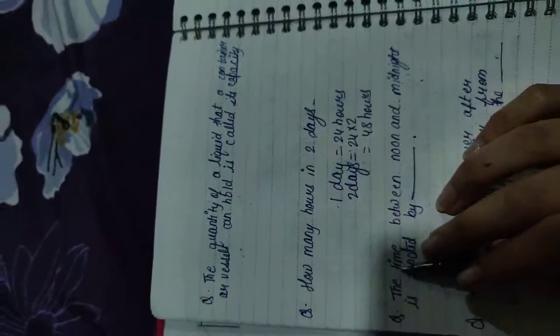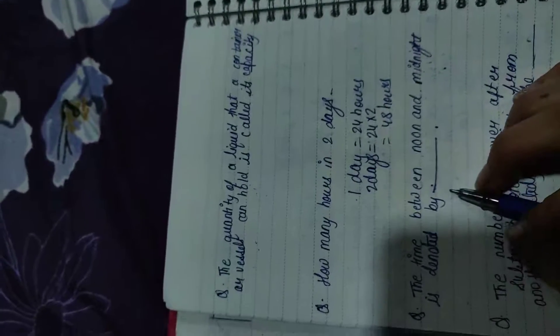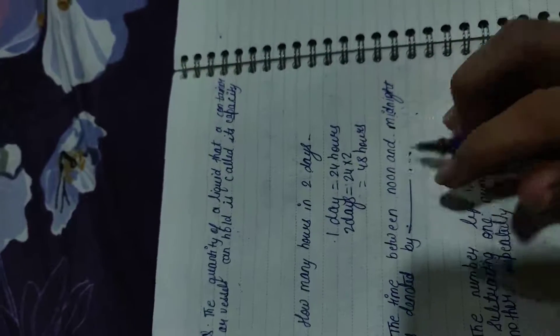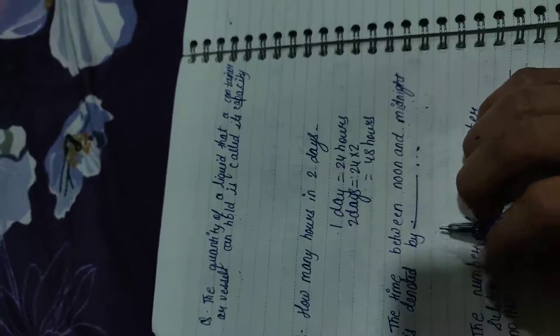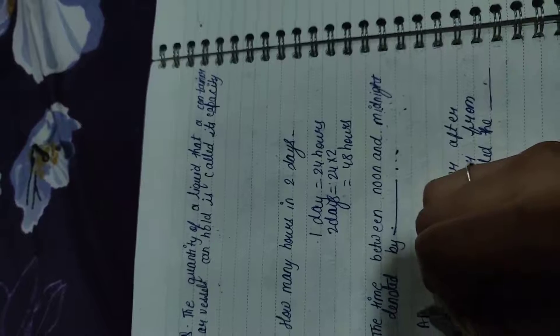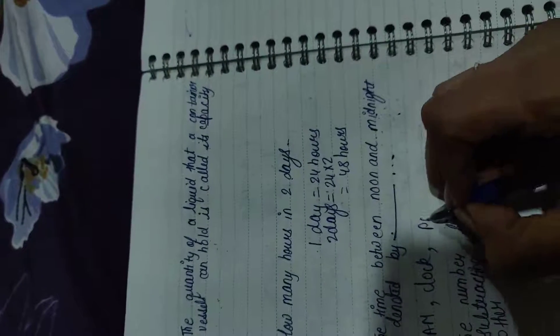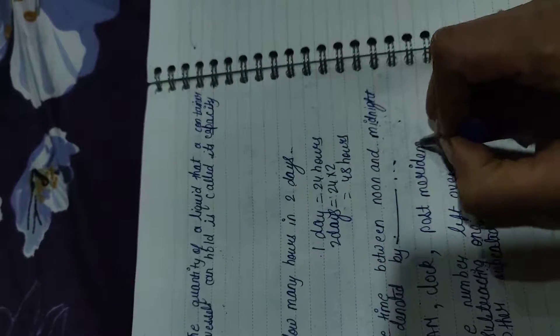Next question: The time between noon and midnight is denoted by? Noon matlab din ke bara baje, midnight matlab raat ke bara baje. Noon se leke midnight tak hum kya denote karte hain? Option hai aapke paas AM. Next option hai clock. Next option hai post meridiem. Post meridiem bol do ya PM bol do.